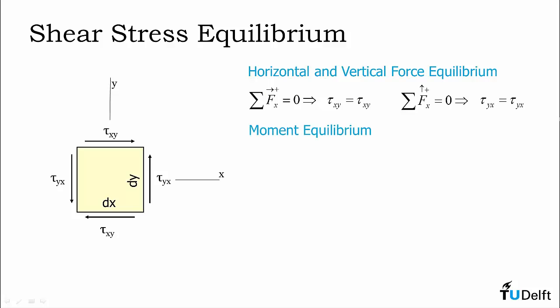However, moment equilibrium is slightly different. We can't actually pick a point where the resultant forces all act through. So we will look at the sum of the moments about the bottom left corner point A as labeled on your screen. Now the resultant due to tau xy at the bottom and tau yx at the left side pass through this point, so we only have to deal with the other two shear stress components.